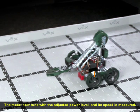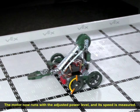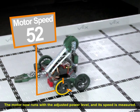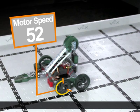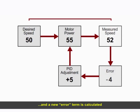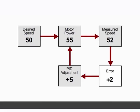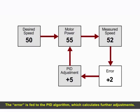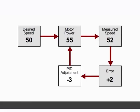The motor now runs with the adjusted power level, and its speed is measured. Its speed is compared against the desired speed, and a new error term is calculated. The error is fed to the PID algorithm, which calculates further adjustments. The adjustment is applied to the motor power, and the cycle repeats.